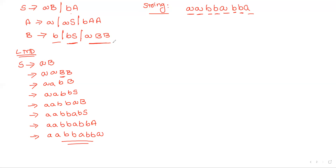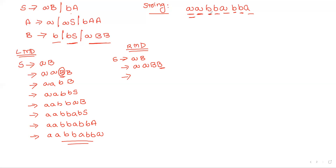Now for the same grammar, we implement rightmost derivation. Again we check the first character 'a', so S → aBbA. The next character is also 'a', so A is replaced with a production starting with 'a'. In leftmost derivation we would replace B first, but in rightmost derivation we first replace the rightmost variable, which is capital B.